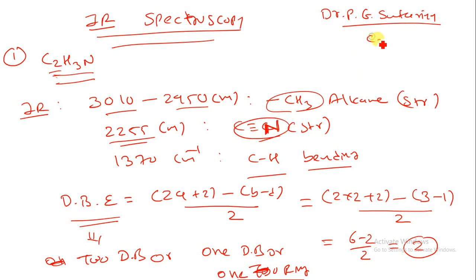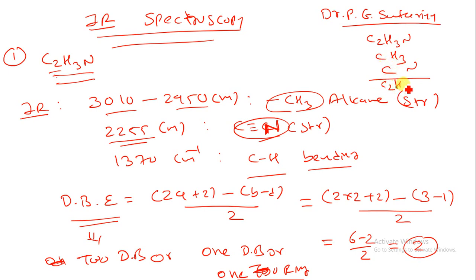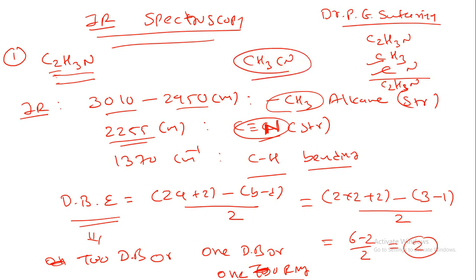We have to sum up these things: C2, H3, and N — that is our main formula. We are getting CH3 and CN. If we put them together: C2, H3, N — the formula is satisfied. So the structure of this compound is CH3CN.